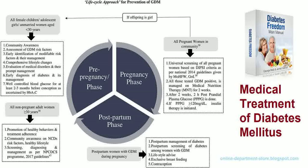Symptoms might quickly develop in type 1 diabetes, mostly in children. Though in type 2 diabetes, the symptoms are typically developed gradually or can be totally absent. Diabetes type 1 can also cause rapid weight loss regardless of normal or increased eating, and mental stress. These symptoms can also be manifested in type 2 diabetes, excluding the weight loss.